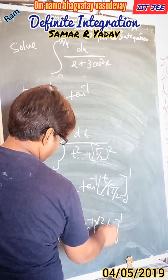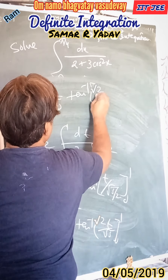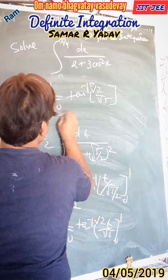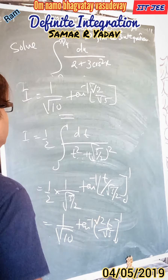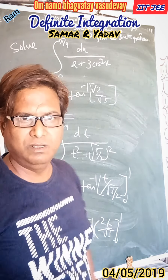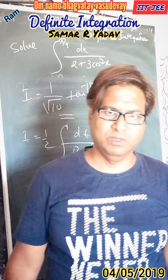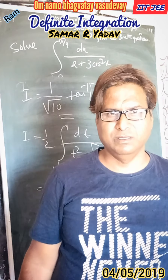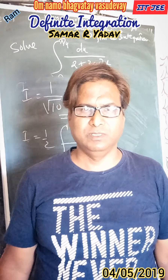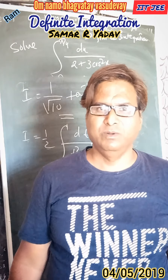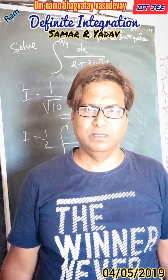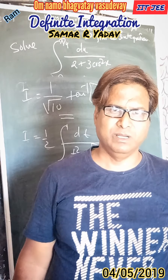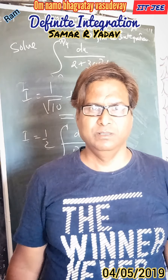Keeping the limit, we substitute t equals 1 to get 2 upon root 5, and at t equals 0 everything multiplied by 0 is 0. So I equals 1 upon root 10 into tan inverse of 2 upon root 5. This is the required solution. To summarize: we divided by cos squared x, used sec squared x and tan squared x identities, applied the substitution tan x equals t, changed the limits, and arrived at the final answer.